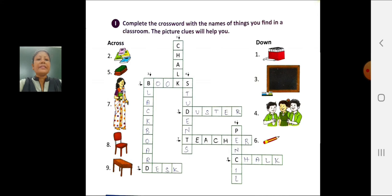Eighth picture is chair. Write the spelling of chair in the crossword, C-H-A-I-R, chair. Ninth picture is desk. Write the spelling of desk in the crossword, D-E-S-K, desk.